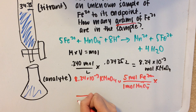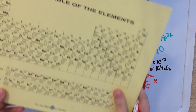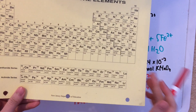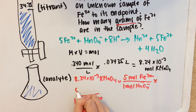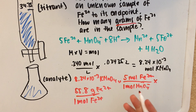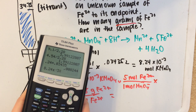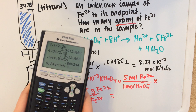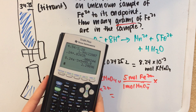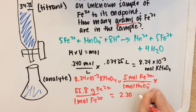We'll multiply by the molar mass: 1 mole of Fe2+ has a molar mass of about 55.8 grams. Remember, even though Fe2+ has lost 2 electrons, it still has essentially the same mass because electrons weigh so little that they're negligible. So, 8.24 times 10 to the negative 3 multiplied by 5 and then by 55.8 gives us about 2.29 to 2.30 grams of Fe2+, which is the final answer.